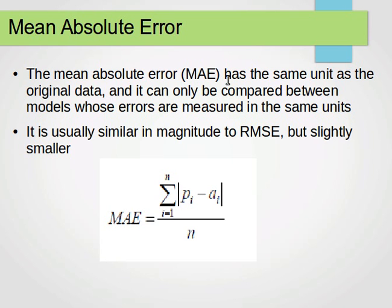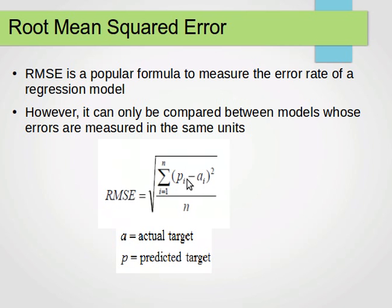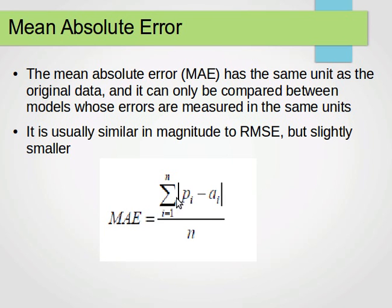The next metric is the Mean Absolute Error (MAE), which has the same unit as the original data. It is similar to RMSE but instead of squaring, we take the absolute value of the difference between the predicted and actual value for each instance — so if it's negative we remove the negative sign, always getting positive values. We sum those over all instances and divide by n.